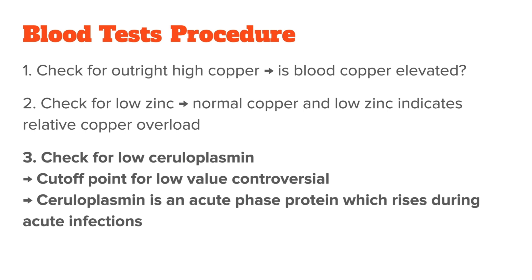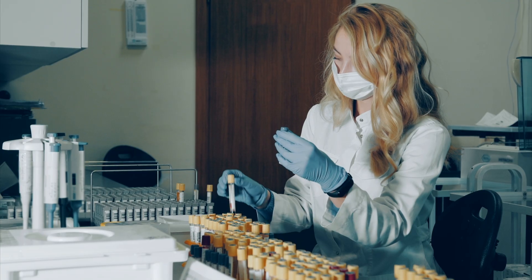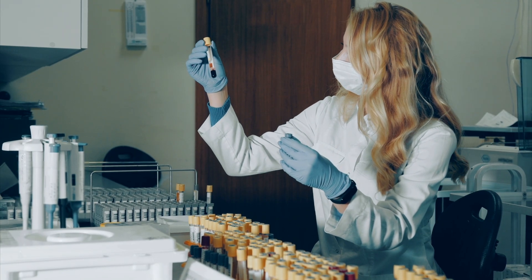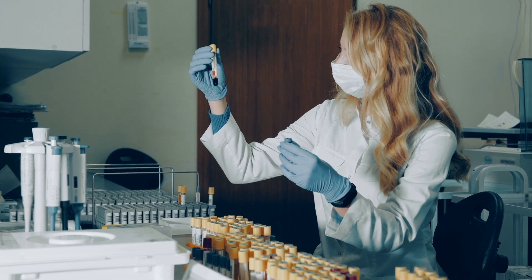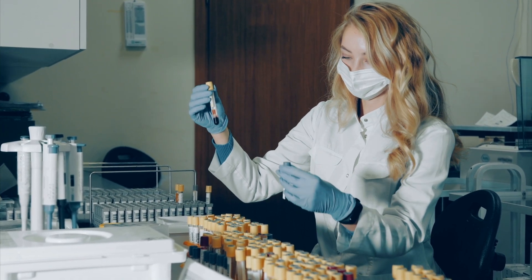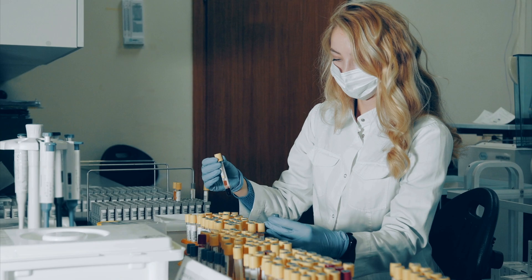Walsh's range of 19 to 39 is fairly broad, and some practitioners see anything under 30 as low already, so keep that in mind. The problem with ceruloplasmin testing is that it's not just a copper transport protein, but also an acute phase protein, which means it will rise during acute infections. So just checking if ceruloplasmin is high enough isn't ideal either — that's why looking at all your tests together is so important.